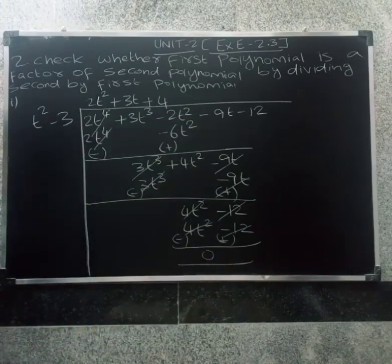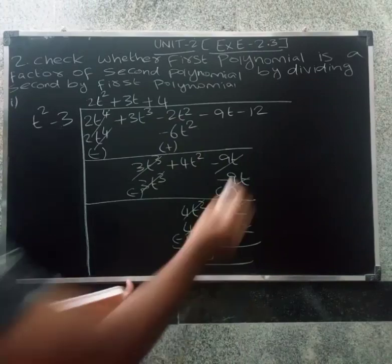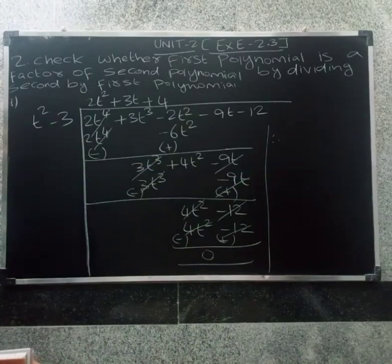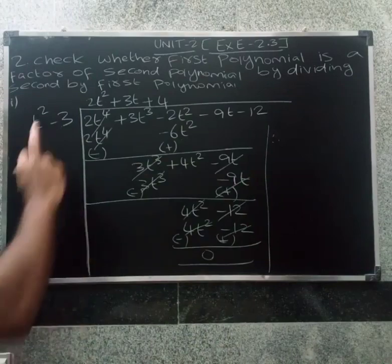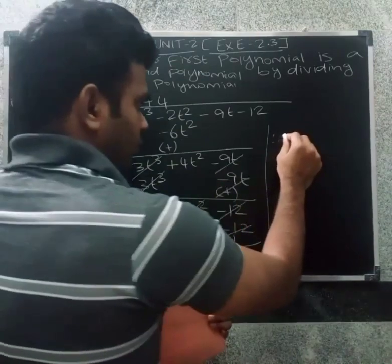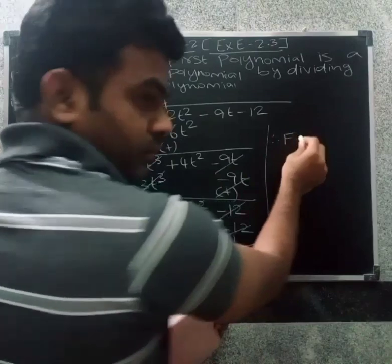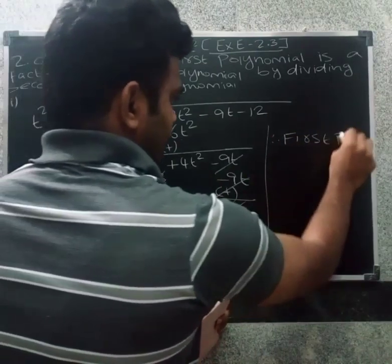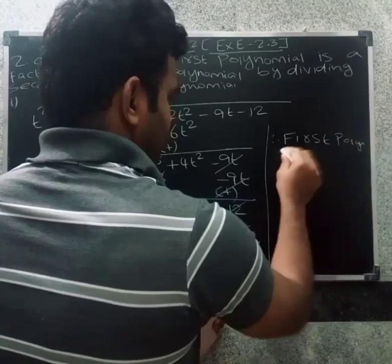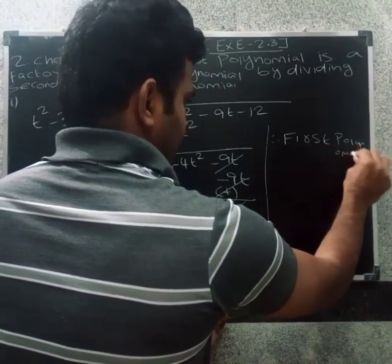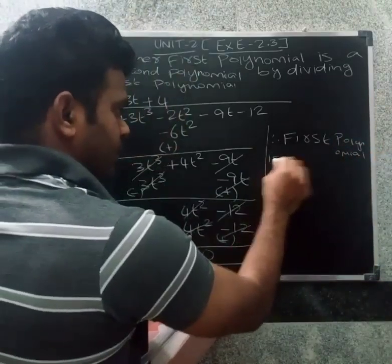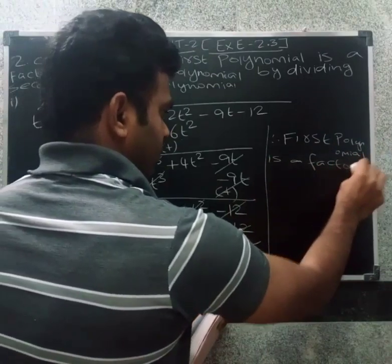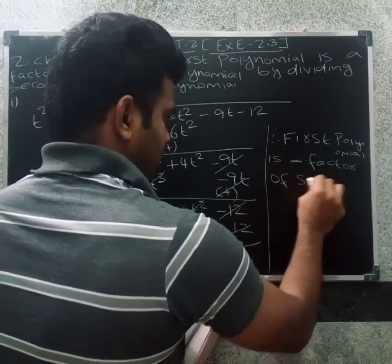Remainder equal to 0. Remainder equal to 0. First polynomial — since the first polynomial is a factor of the second polynomial, therefore first polynomial is a factor of the second polynomial.